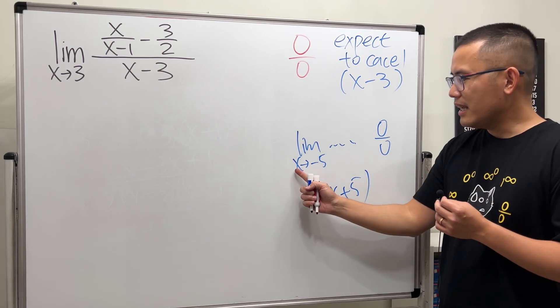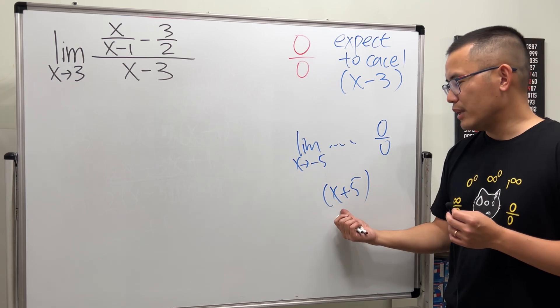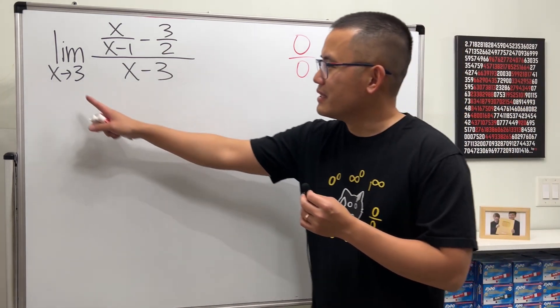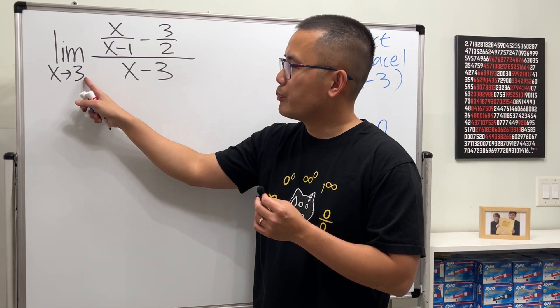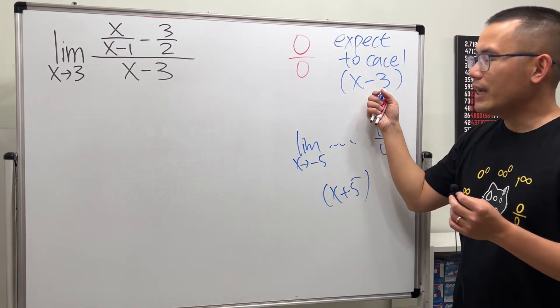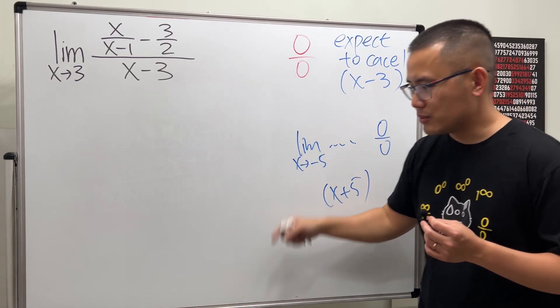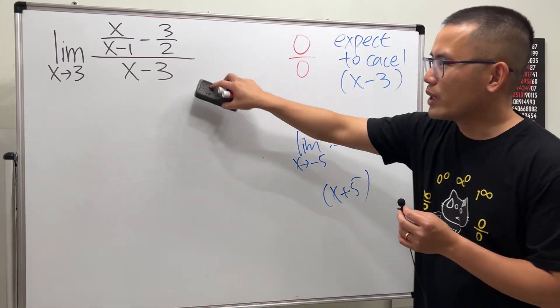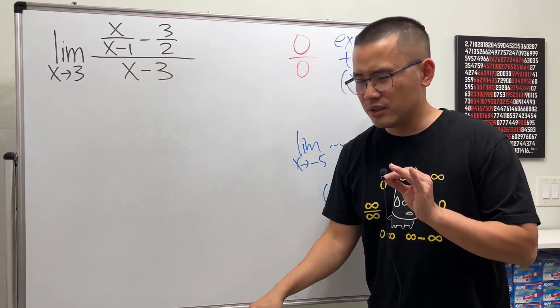Just look at this like x equals negative 5, bring this to the other side and you get x plus 5. You see x is approaching 3, bring this to the other side, you're expecting to cancel the x minus 3.